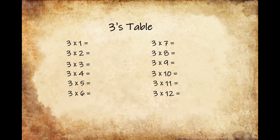Now for the threes table, 3 times 1 gives us 3, 3 times 2 gives us 6, 3 times 3 gives us 9, 3 times 4 gives us 12, 3 times 5 gives us 15,